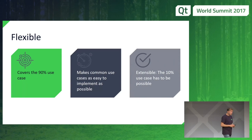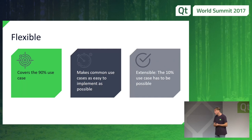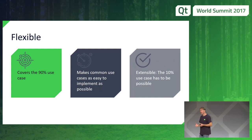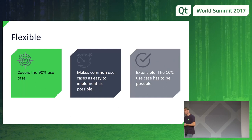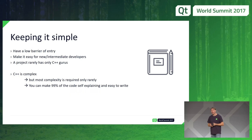APIs should be flexible. For me, that means covering the 90% use case and making it very simple — as simple as we can make it. But they also need to be extensible for the remaining 10% of use cases that go beyond what the API provides out of the box. That 10% should still be possible — it means writing a bit of your own code, but you can do it.